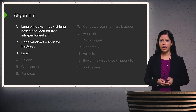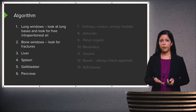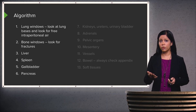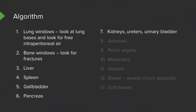I then take a look at the liver, scrolling multiple times through it. I then go on to the spleen, the gallbladder, and the pancreas — scrolling through each multiple times before moving on. I then look at the renal collecting system and the kidneys, the adrenal glands, and then all of the pelvic organs. I then evaluate the entire mesentery, the blood vessels, and the entire bowel. Always check the appendix — even in a patient not presenting with abdominal pain, because you may find occult appendicitis. I then take a look at all of the soft tissues.